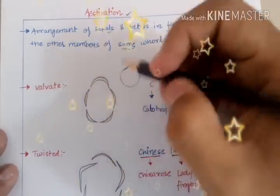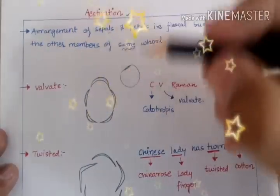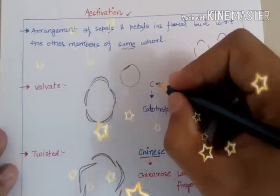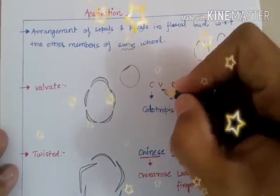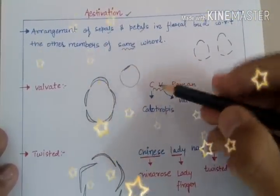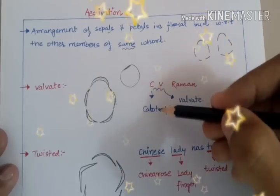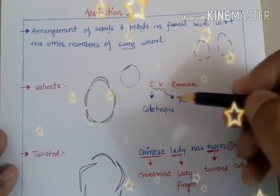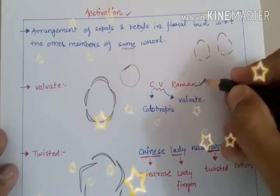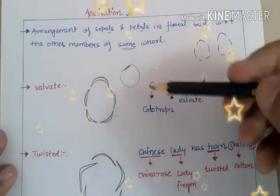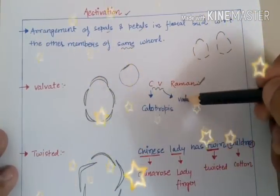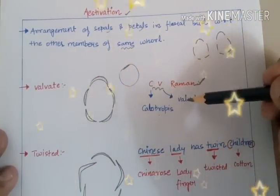This arrangement is known as Valvate Estivation. The example can be memorized by the name of the great scientist C.V. Raman. Here, C means Calotropis and V means Valvate Estivation. Raman has no significance, so you can also memorize it as C.V. — that is, Calotropis shows Valvate Estivation.